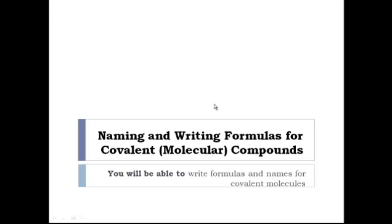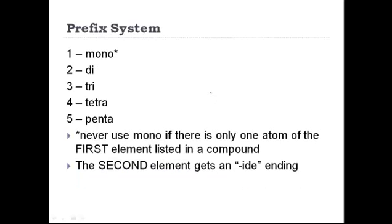By the end of this lesson you will be able to write formulas for covalent compounds and also write names for covalent compounds. In previous lessons we talked about how to write formulas and names for ionic compounds and there are a bunch of special cases with ionic compounds and it can get a little bit complex. Covalent or molecular compounds are a lot simpler to name and write formulas for because they all use the same prefix system.